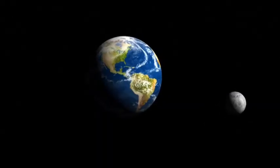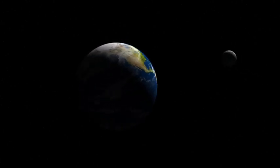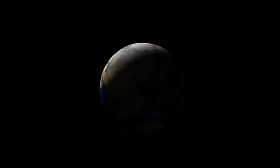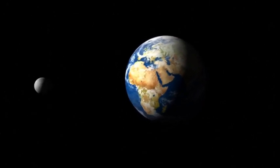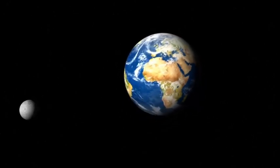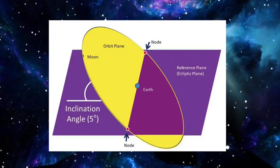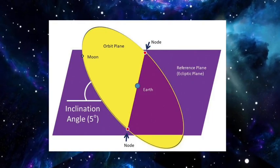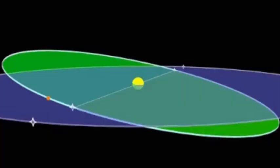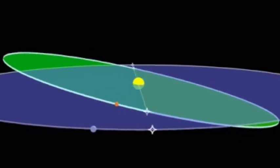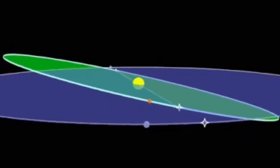Every 29.5 days, the Moon completes an orbit around the Earth. However, this orbit is not flat. There is a five-degree difference between the angle of the Moon's orbit and the ecliptic plane — the 2D plane on which the Earth orbits around the Sun.